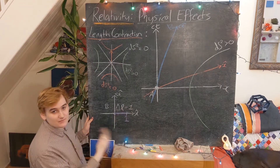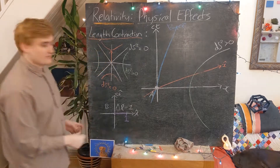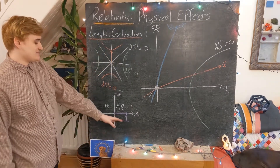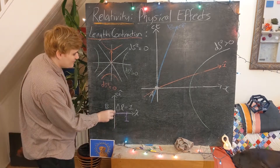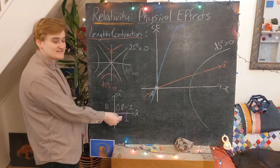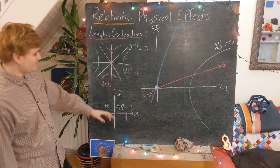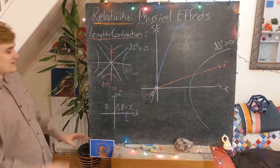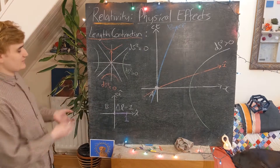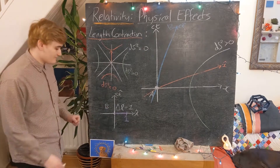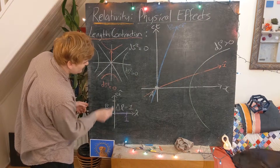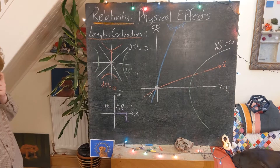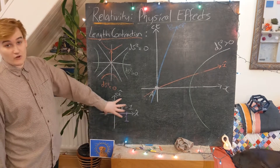This L symbol is what we associate with proper length. Because this is a stationary reference frame, this completely space-like distance can be associated with a proper quantity — we call that the proper length, in contrast to proper time, which would lie completely along the time axis. So this is our rod, at rest in the B frame.